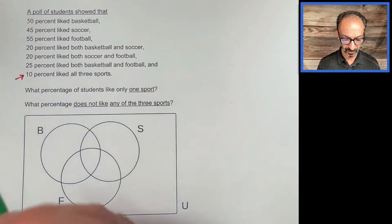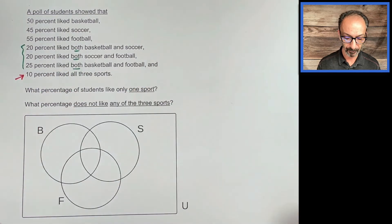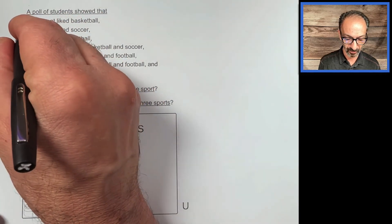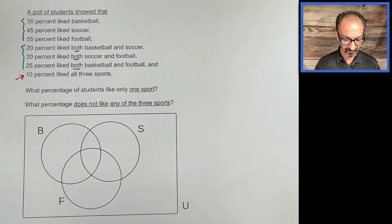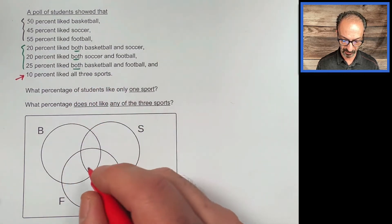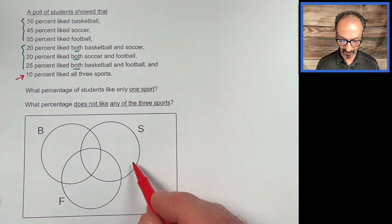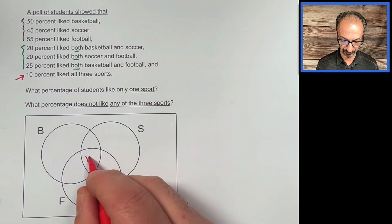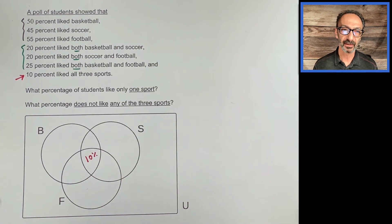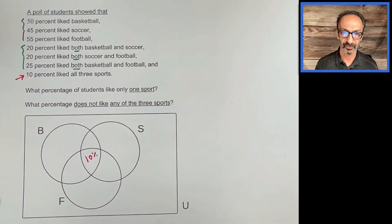I'm going to go backwards to these intersections which have the word 'both,' then finally go to the individual sets. We have 10% liked all three sports — that is inside soccer, basketball, and football, right in the center. My advice is to start from inside going outside; that's the best way to do it.